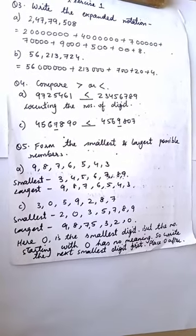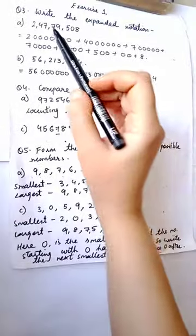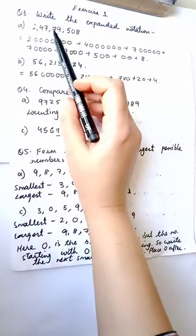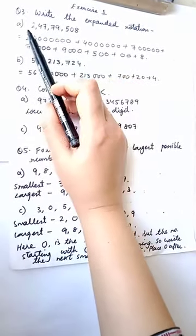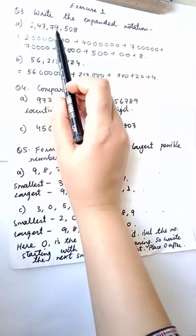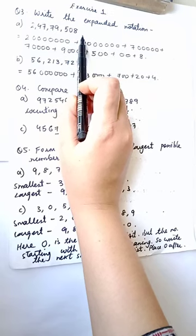So here, children, you can see — count the first question number 3: write the expanded notation of 24,779,508.